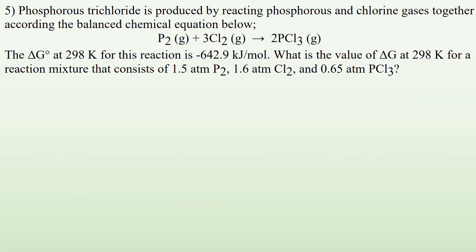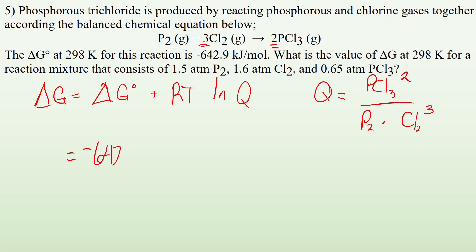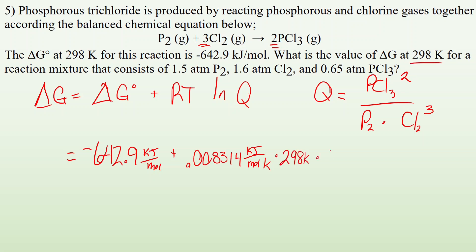Number five, the last one: phosphorus trichloride is produced by reacting phosphorus and chlorine gases. The delta G0 at 298 K is negative 642.9 kilojoules per mole. We need delta G at 298 K for a given reaction mixture, using the same equation: delta G equals delta G0 plus RT times ln of Q. The Q expression has PCl3 squared in the numerator (coefficient of 2) divided by P2 times Cl2 cubed (coefficient of 3).